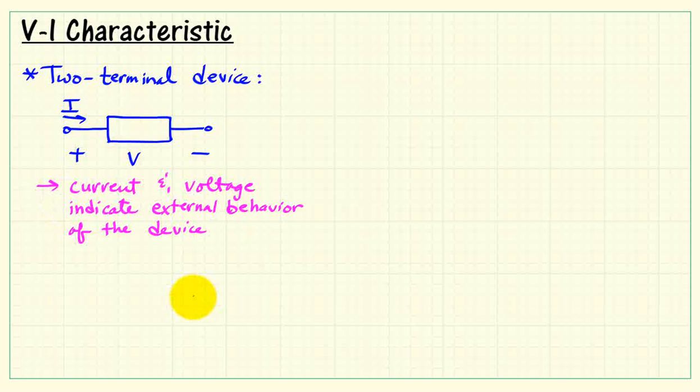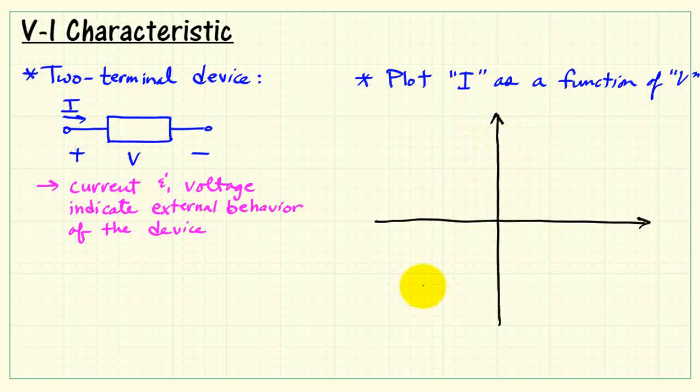The current and voltage indicate external behavior of the device that we could actually observe and measure. Now, let's plot the current I as a function of the voltage V. This plot is what we call the V-I characteristic.